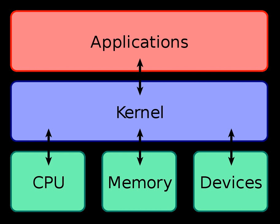In a monolithic kernel, all OS services run along with the main kernel thread, thus also residing in the same memory area. This approach provides rich and powerful hardware access. Some developers, such as Unix developer Ken Thompson, maintain that it is easier to implement a monolithic kernel than microkernels. The main disadvantages of monolithic kernels are the dependencies between system components — a bug in a device driver might crash the entire system — and the fact that large kernels can become very difficult to maintain. Monolithic kernels, traditionally used by Unix-like operating systems, contain all the OS core functions and device drivers.